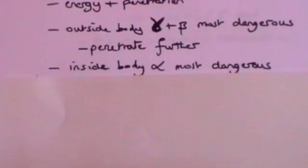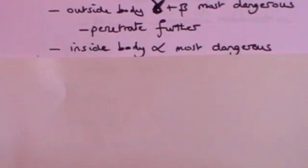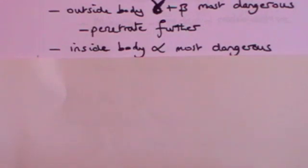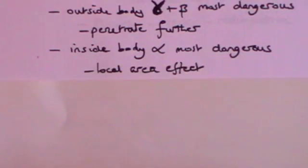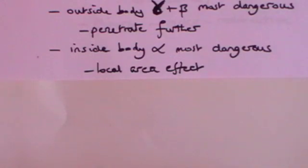But inside your body, the most dangerous is alpha particles, because they can't get out — they will be absorbed within the first millimetre of whatever cells they encounter. So all the energy of alpha particles, if they're inside your body, will do you a lot of damage. There will be a local area effect around the alpha source: wherever the alpha rays are coming from, in that immediate area, all those alpha rays will be absorbed and will cause damage.